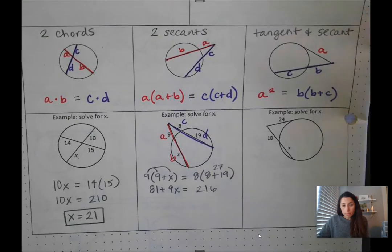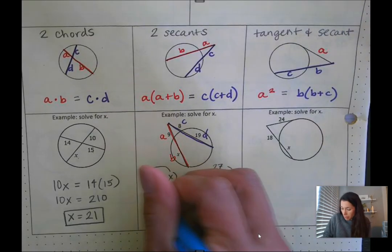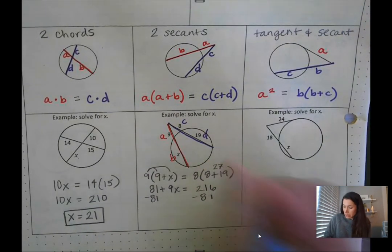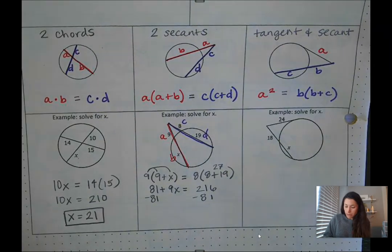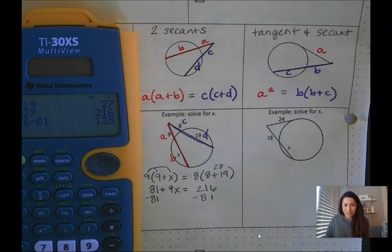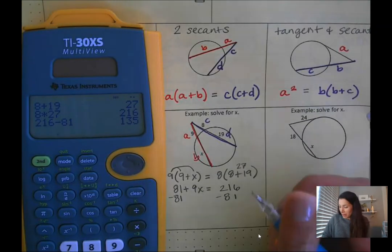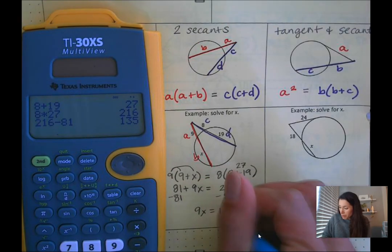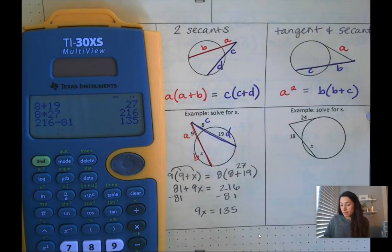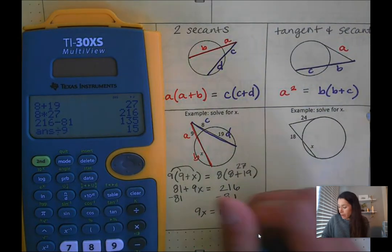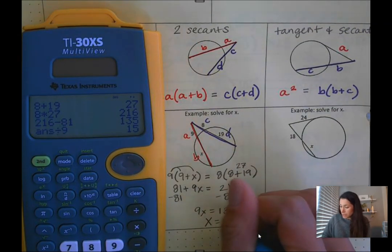From here we can subtract 81 on both sides. So 216 minus 81, that would give us 9X equals 135. And then I just need to divide by 9 on both sides. So X is 15.